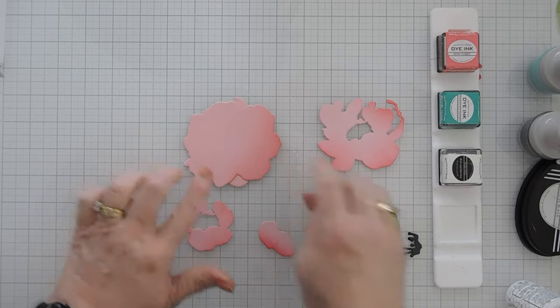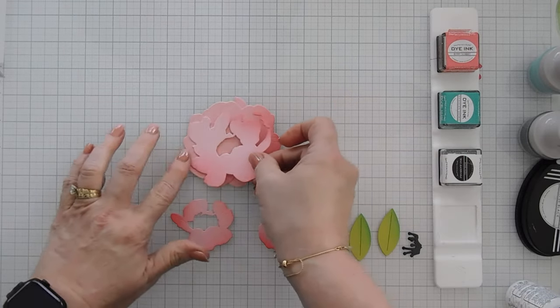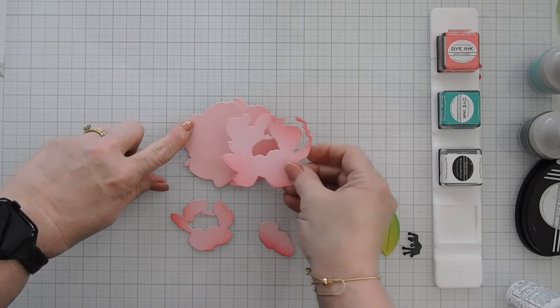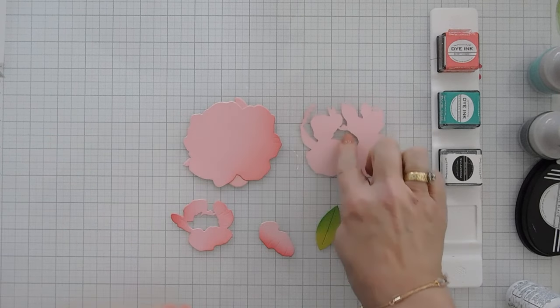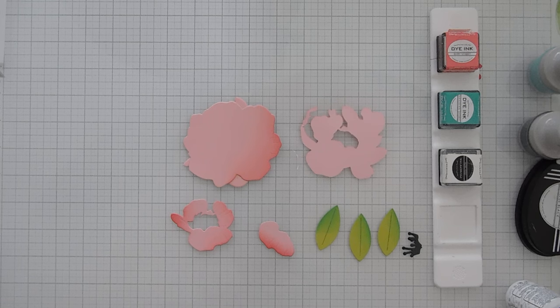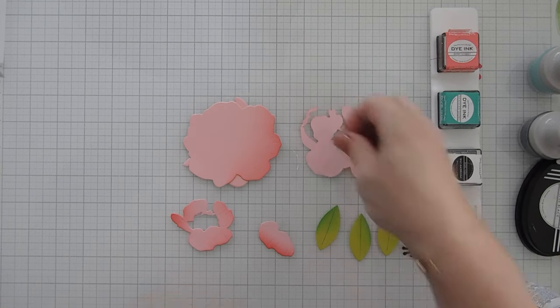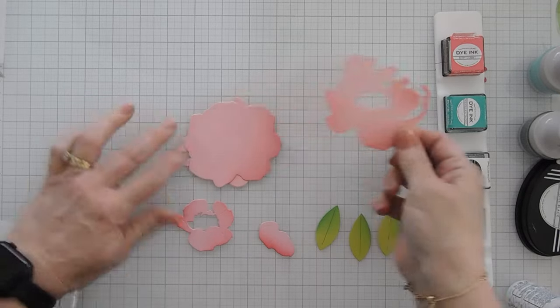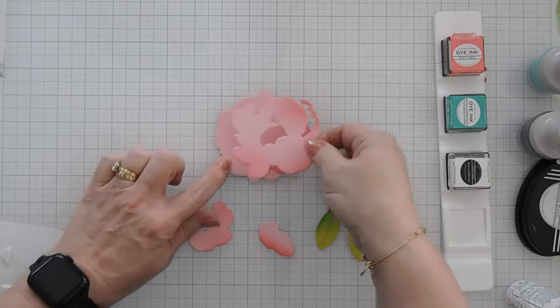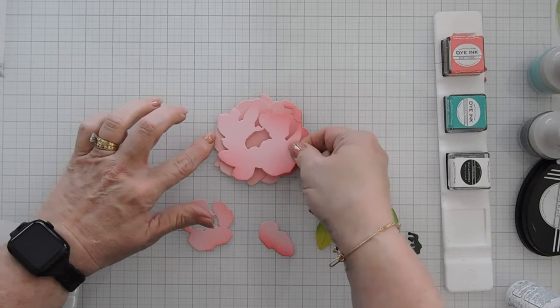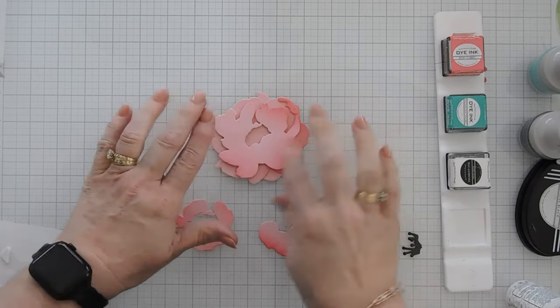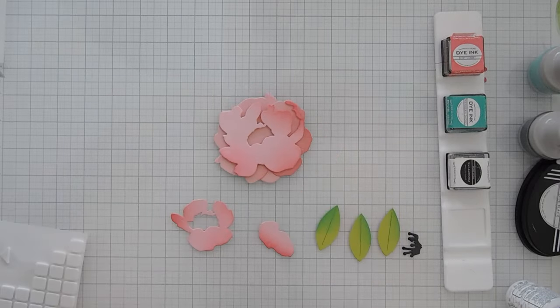Okay once we have this adhered, this is going to layer here using that key point here. So I'm going to flip this over. We're going to put foam tape on the reverse side. Add a little dimension and then again I'm using this as my key point. I'm going to line it up and it will fit like a puzzle. We'll just tack this down.